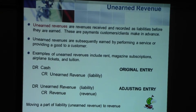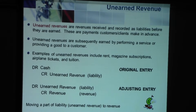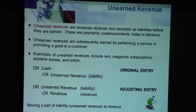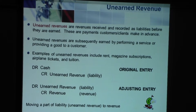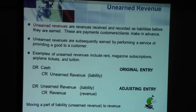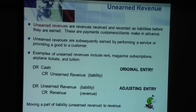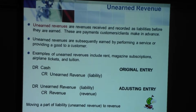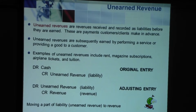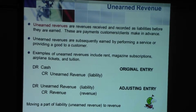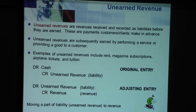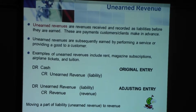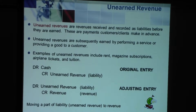Unearned revenue is a liability account — this is your original entry when someone pays you the cash. When you actually earn the revenue as time goes by, you take it out of the unearned revenue account and put it in the revenue account by debiting unearned revenue and crediting revenue. This is your adjusting journal entry. For example, you retain a lawyer and they ask for a $1,000 deposit. After three months when the work is complete, the lawyer takes that $1,000 from unearned revenue and puts it into their revenue account.